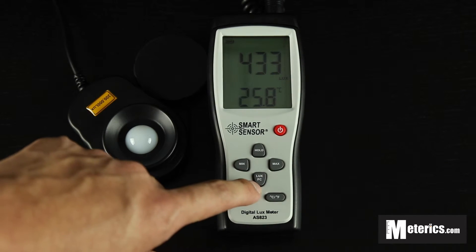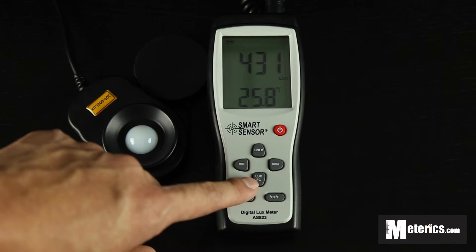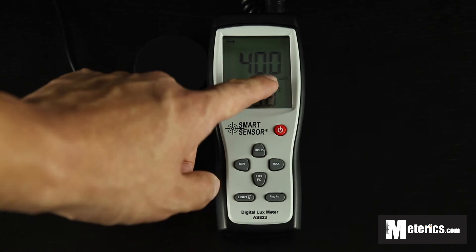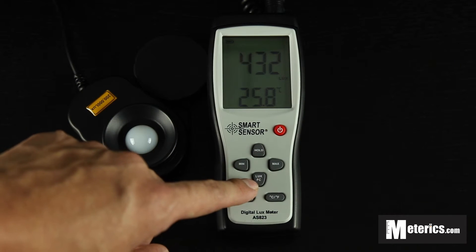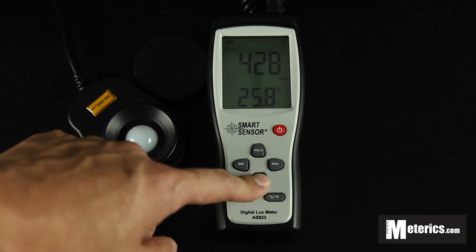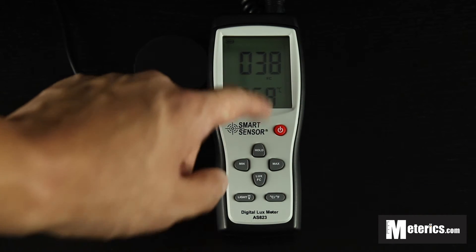The fourth button is the FC and Lux. This is basically the light units which you can select from. Right now it's on Lux and if you prefer FC, also known as foot candles, you just press that once and it will go to FC.